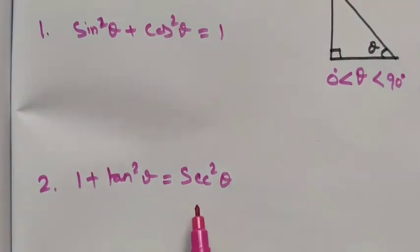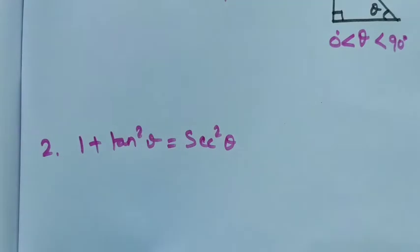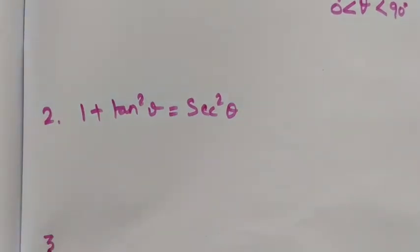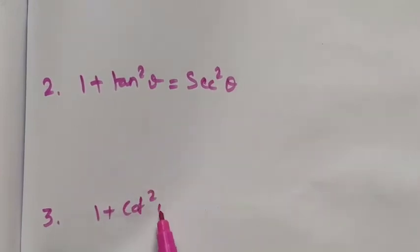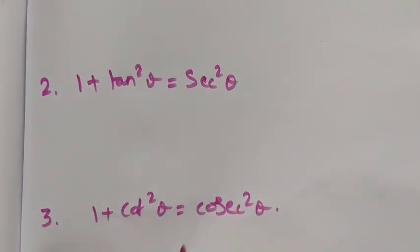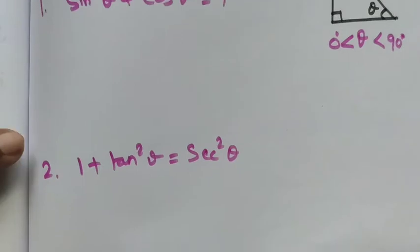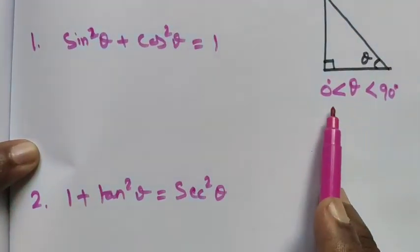Listen carefully: wherever it is a square, then only we can use the identity, otherwise it is not possible. Sin theta plus cos theta — we cannot use the identities; it is sin square theta plus cos square theta only. The last identity is 1 plus cot square theta is equal to cosecant square theta. These are the three identities, satisfied when theta is greater than 0 and less than 90 degrees.